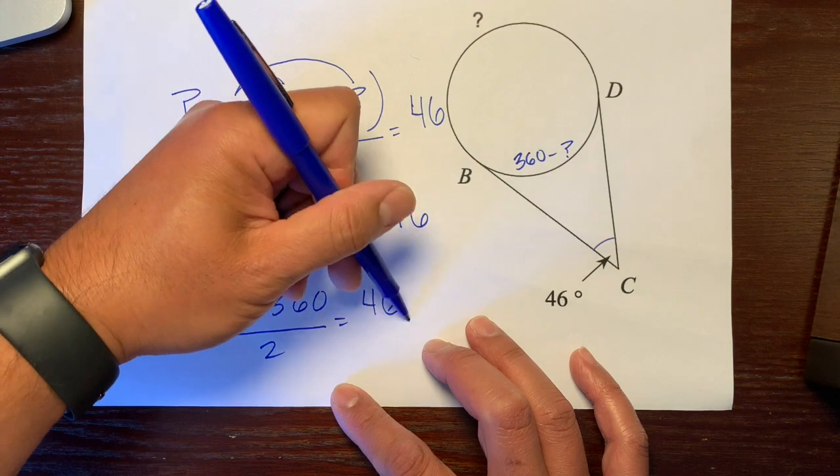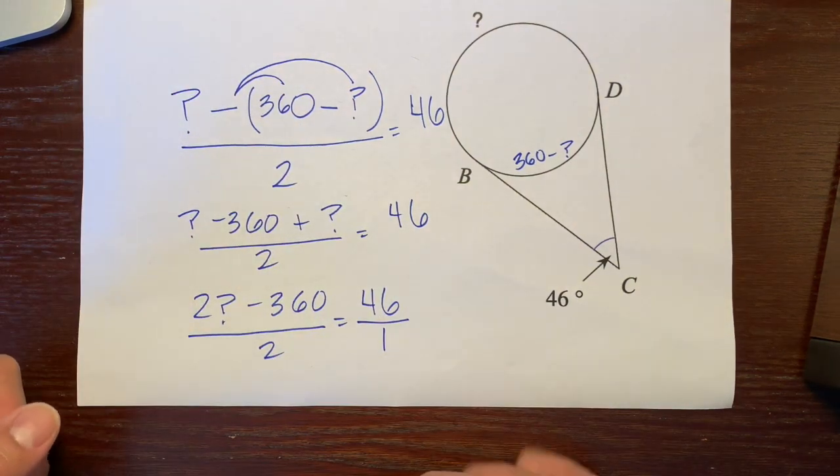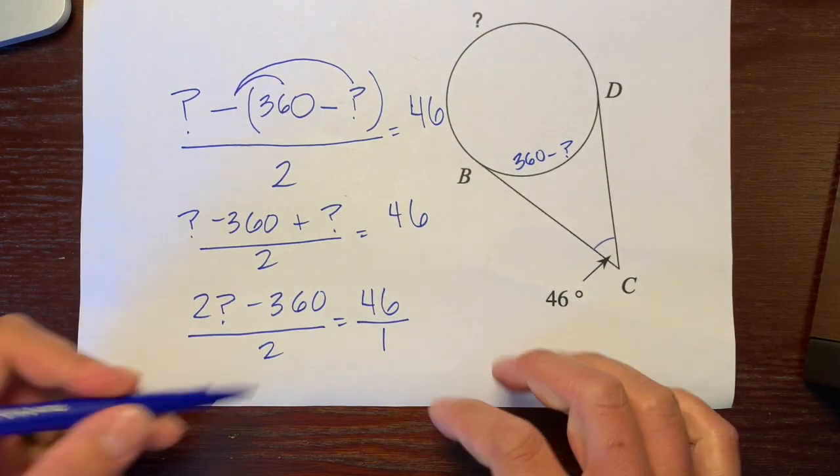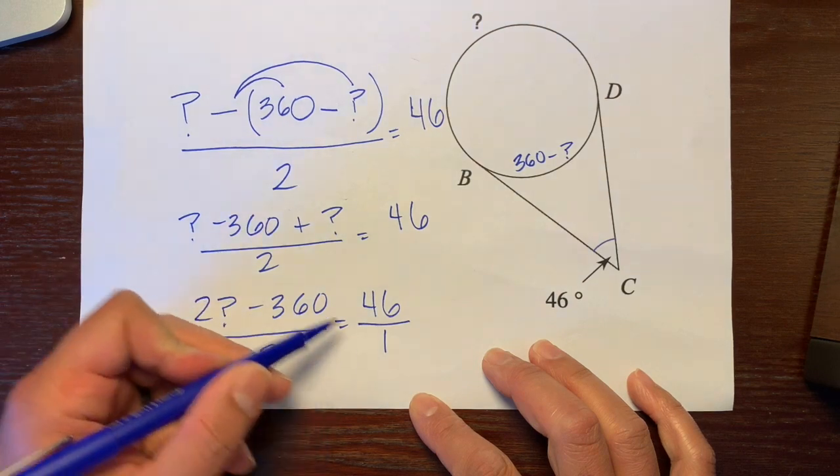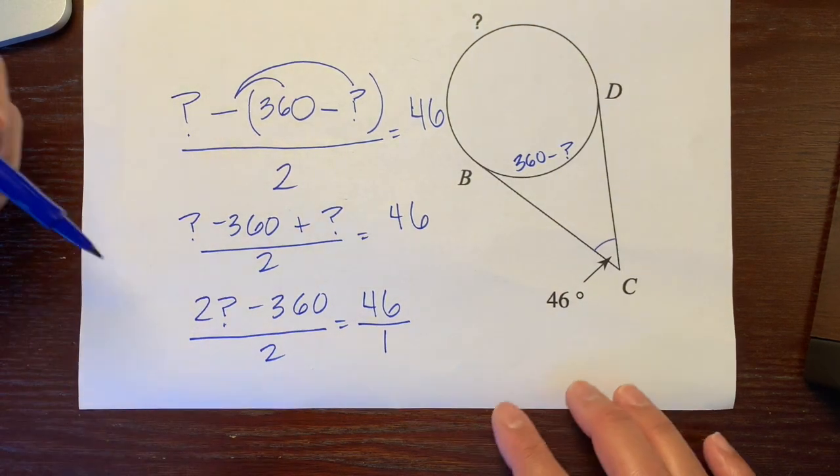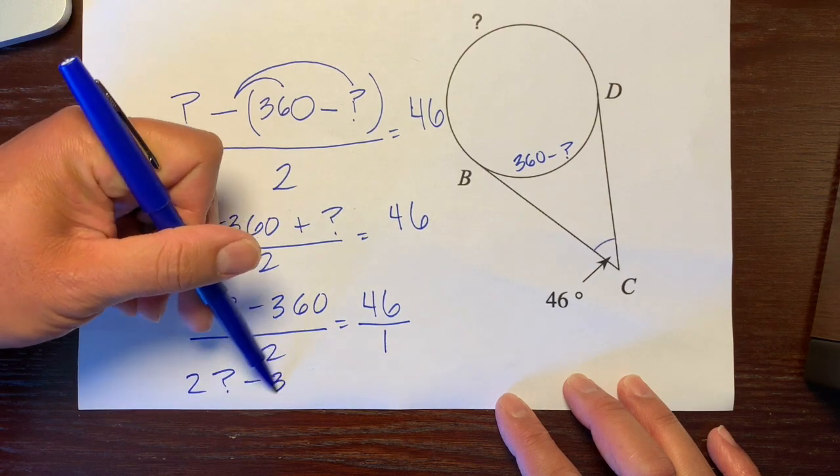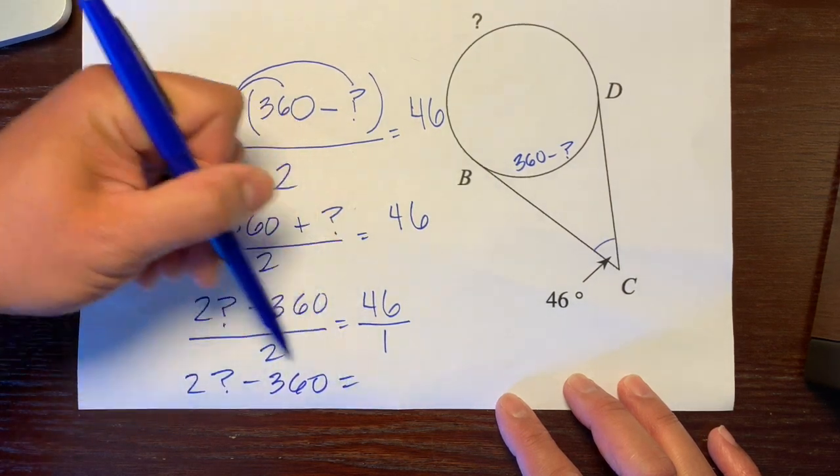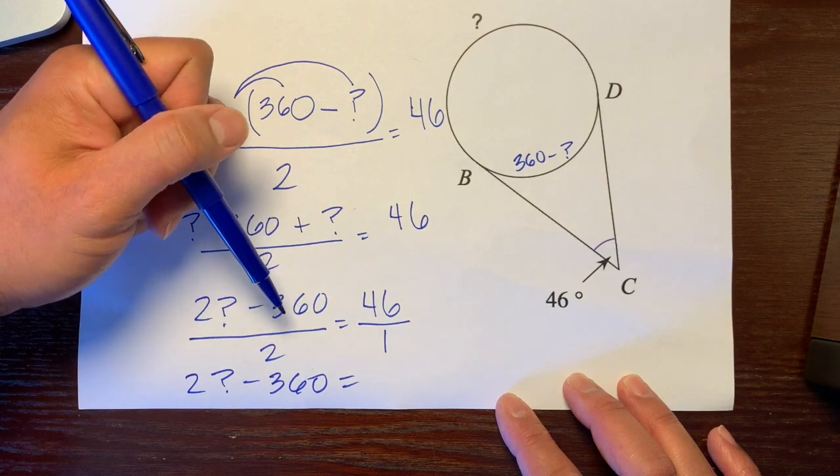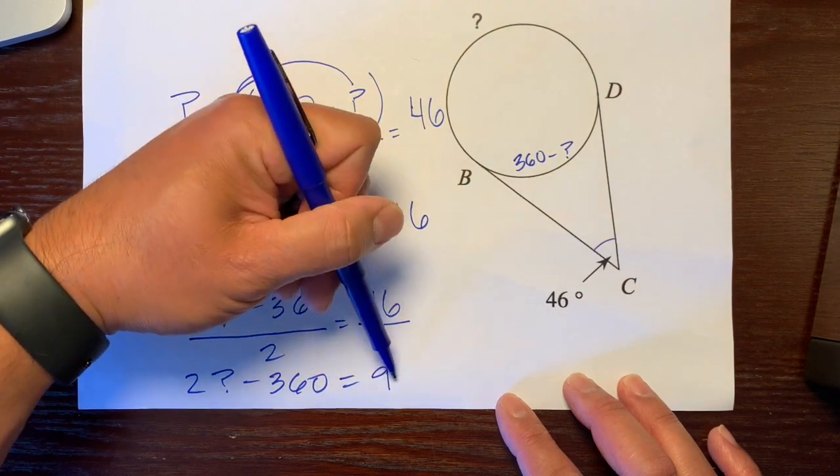Let's put that invisible 1 underneath and cross multiply. 1 times all of this is 2 times question mark minus 360, which equals 2 times 46, which is 92.